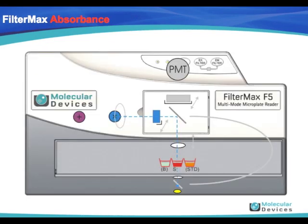This diagram shows how the FilterMax machine will measure the absorbance of our samples. The X in the blue circle represents the LED rotator that releases the light. The blue dotted line represents the path of the light. The light goes through the blue box, which is the filter, and is reflected through the collimated lens, which is represented by the white circle.